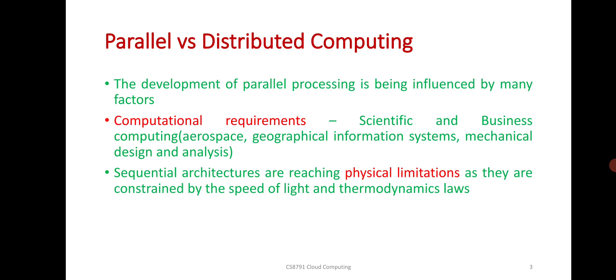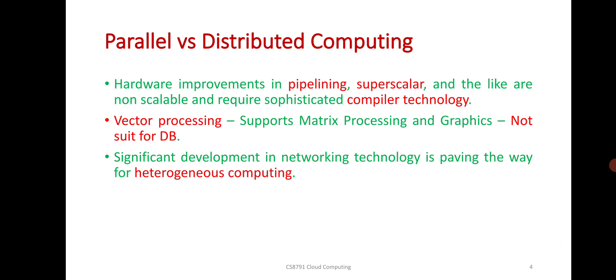It will be used in aerospace, geographical information systems, mechanical design and analysis fields. Sequential architectures are reaching physical limitations as they are constrained by the speed of light and thermodynamics loss. Hardware improvements include pipelining and superscalar.